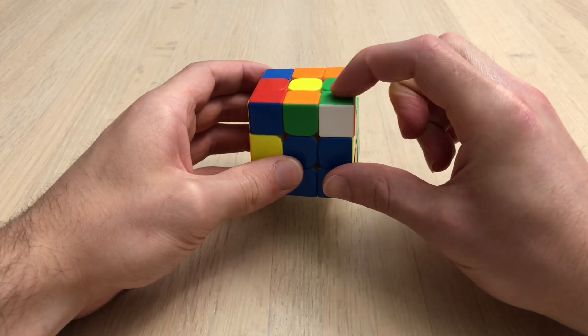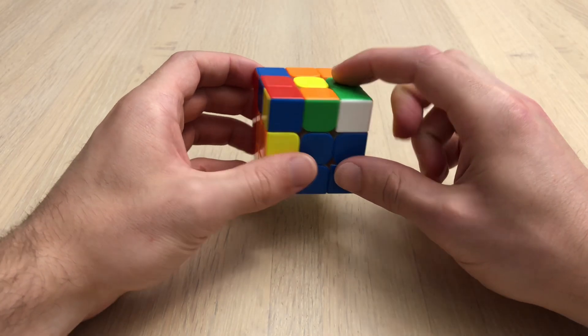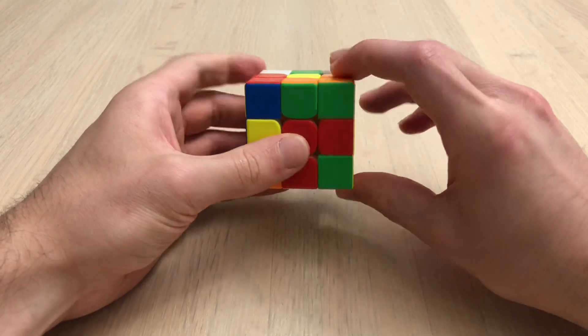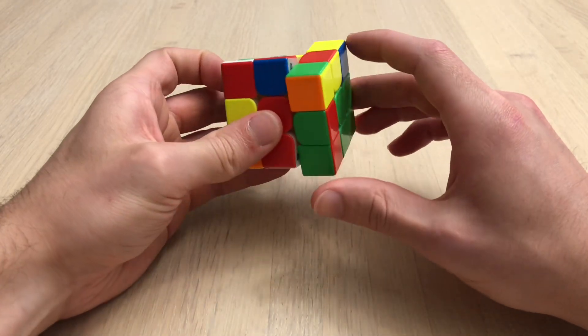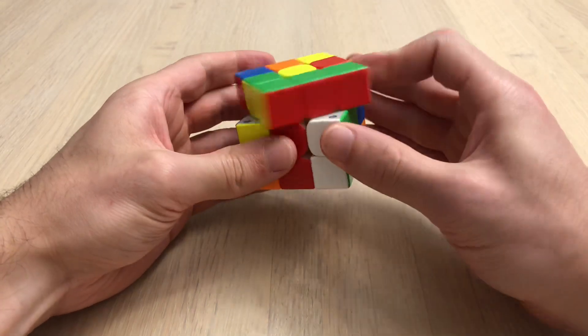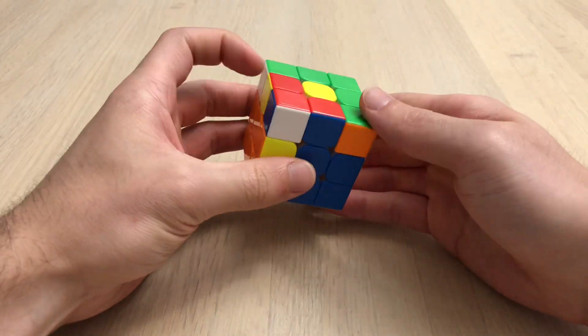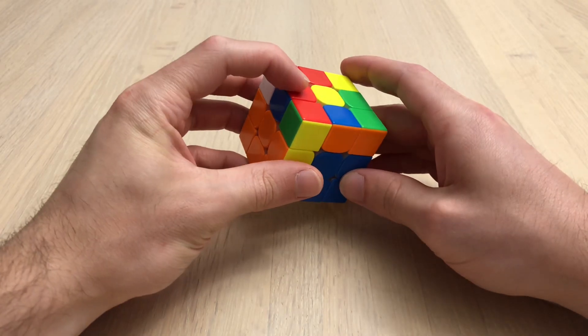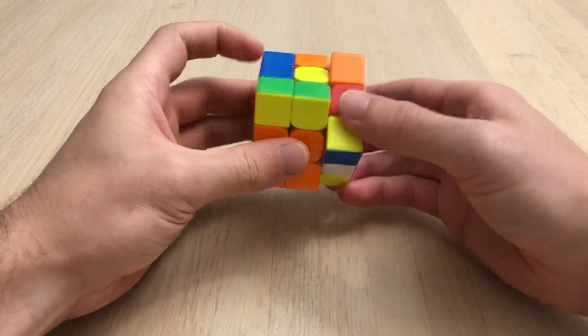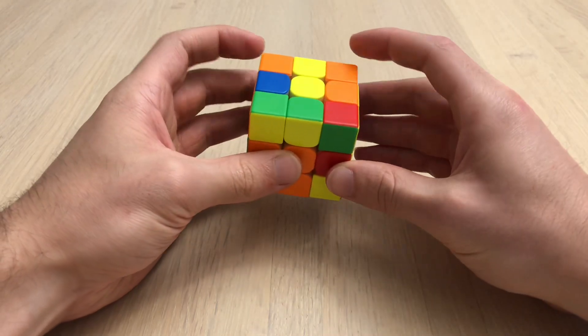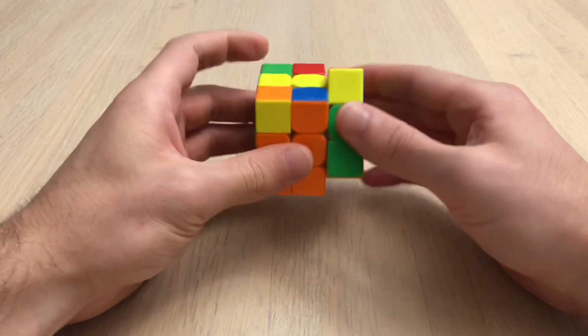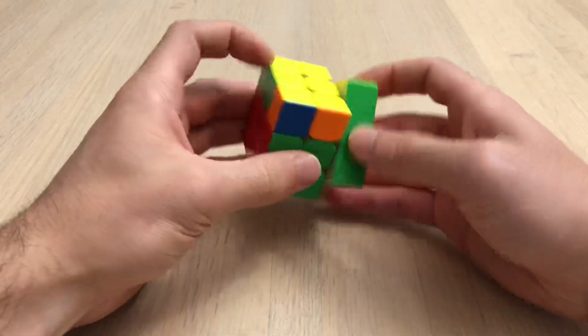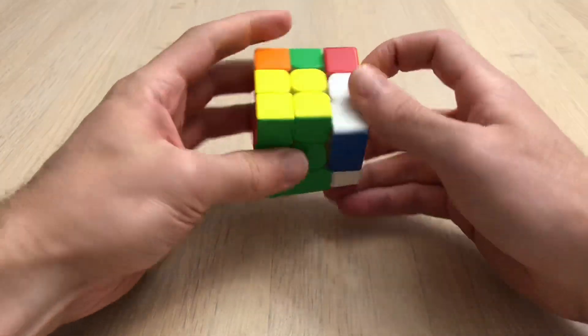Right away I see this pair right here. Rotate, pair them up. While doing that I saw these two, insert into the back, then I saw these two, then these two. OLL and PLL.